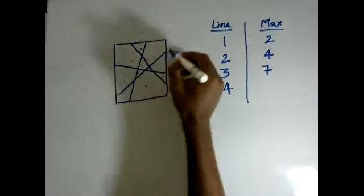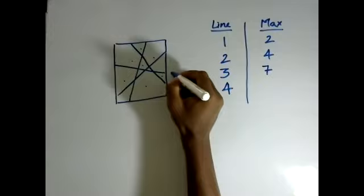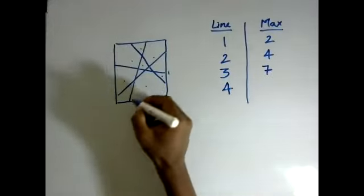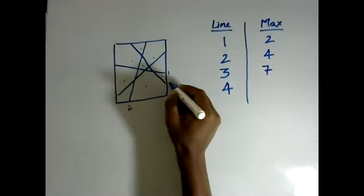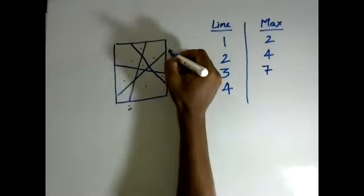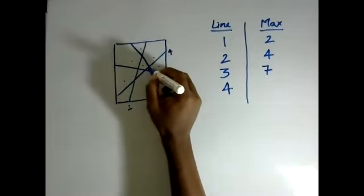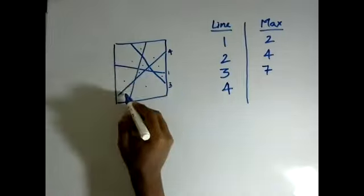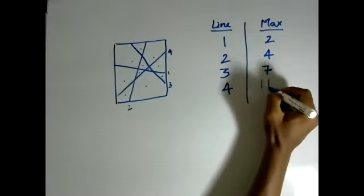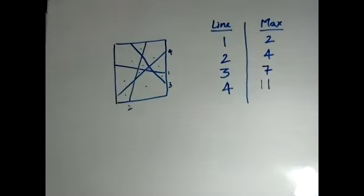So now you get with the fourth line. So let's say this is the first line. This was the second line. This was the third line and this was the fourth line. So you got seven, eight, nine, ten and eleven. So the number of maximum pieces that you get are eleven.